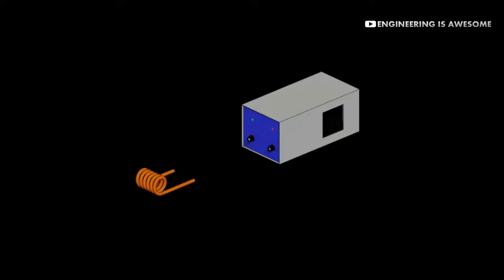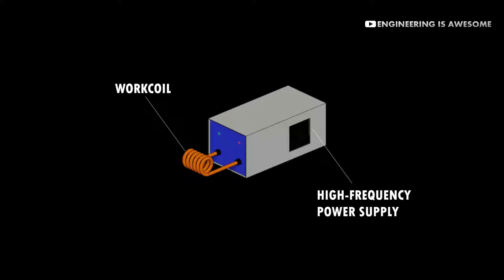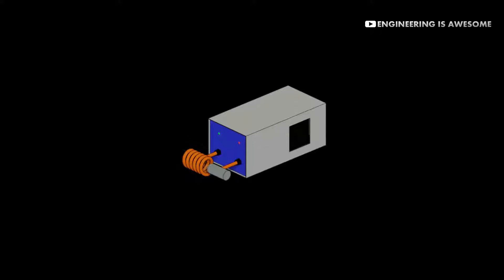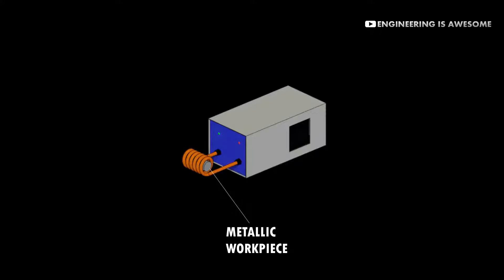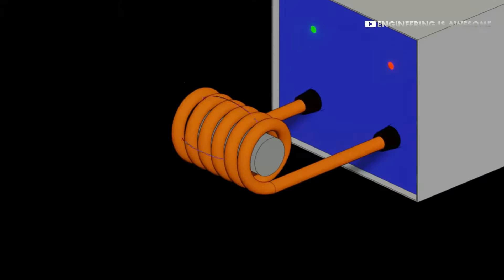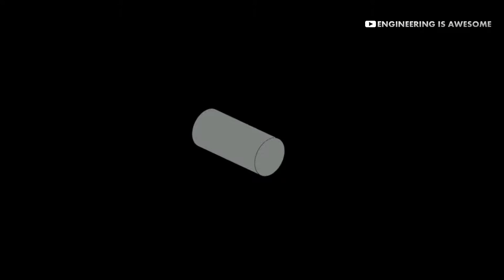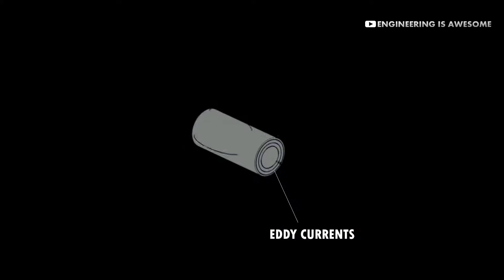An induction heating setup usually contains a work coil which is connected to a high-frequency power supply. Now, if we place a metallic workpiece within the work coil which is generating high-frequency magnetic fields, the magnetic field lines will penetrate through the metal and it will induce eddy currents within it.